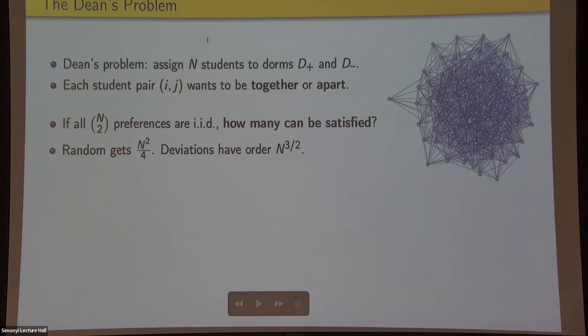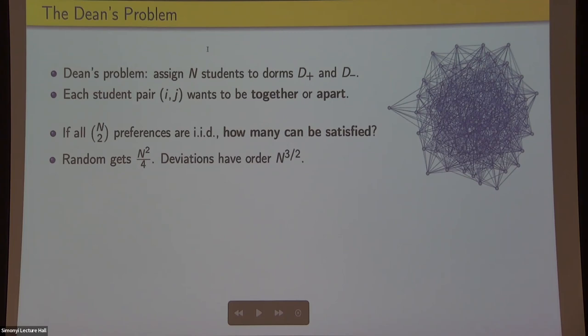Our goal is to satisfy as many of these preferences as possible. Of course, if we take a random assignment, we'll get half of the preferences satisfied, but we're interested in the deviations that we can get. If you draw the friendship graph, this is almost the same as looking for something like a max cut. It turns out the deviations have order n to the three halves, and we'd like to understand this very precisely.